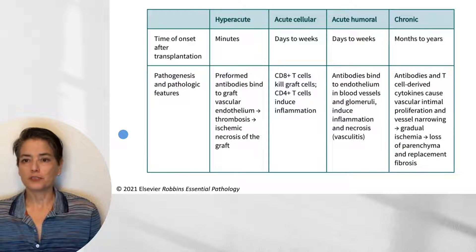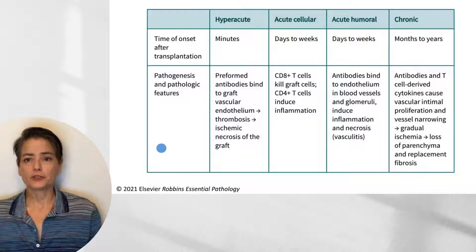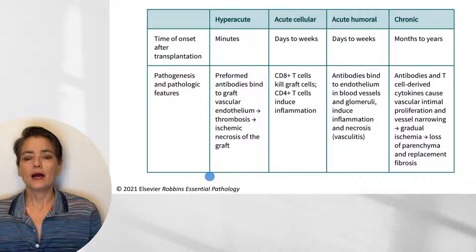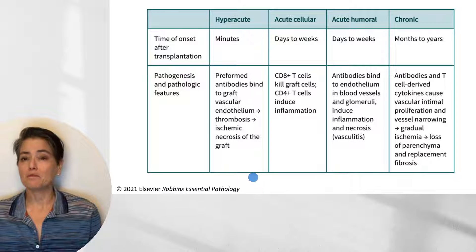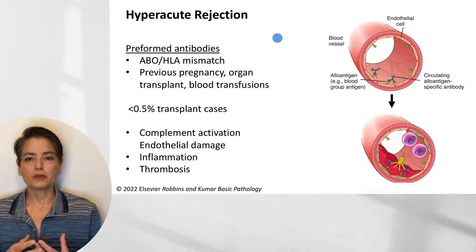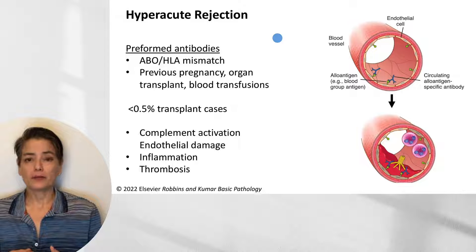This table from Robins Essential Pathology, based on a renal transplant case, nicely shows the time of onset after transplantation and the pathogenesis for each type of rejection. Hyperacute rejection occurs within minutes of the graft being attached to the vascular system of the host. When the organ is attached to the blood supply, instead of plumping up and becoming pink as blood flows in, it becomes dusky, swollen, and edematous, and we very quickly see hemorrhage and necrosis.